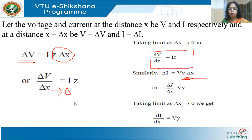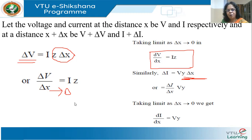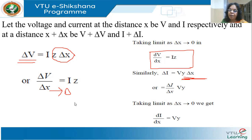We are used to voltage changing along the line — the receiving end voltage equals sending end voltage minus the voltage drop. But we don't normally think of current changing in a series path; we assume the current entering and leaving are the same if there are no parallel paths. Here I am giving a differential for the current: dI/dX describes how current changes as a function of distance.